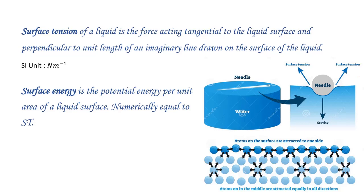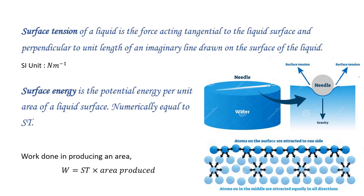Surface energy is the potential energy per unit area of a liquid surface, and it is numerically equal to the surface tension. The work done in producing an area is given by the surface tension multiplied by the area produced. Therefore, as the area produced increases, the work done also increases.